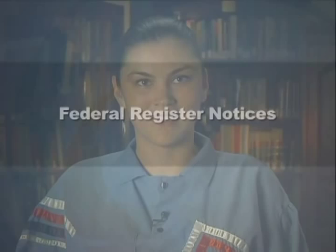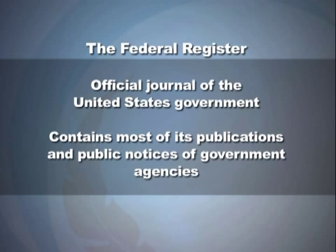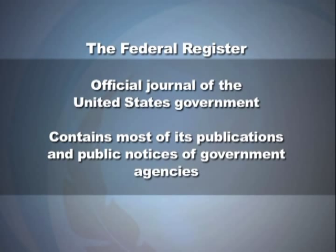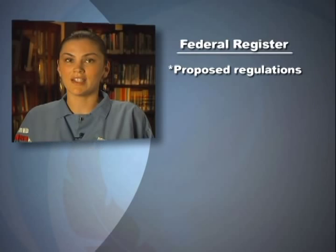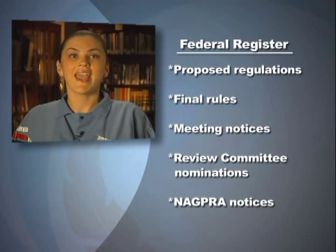Now that we've discussed notices of intended disposition, let's talk about Federal Register notices. The Federal Register is the official journal of the United States government containing publications and public notices of government agencies, including proposed regulations, final rules, meeting notices, review committee nomination solicitations, and NAGPRA notices.